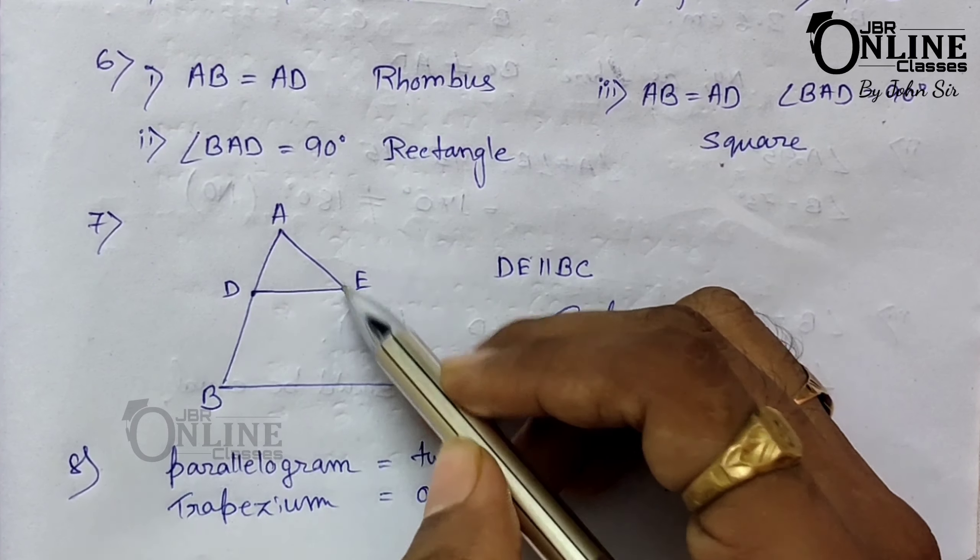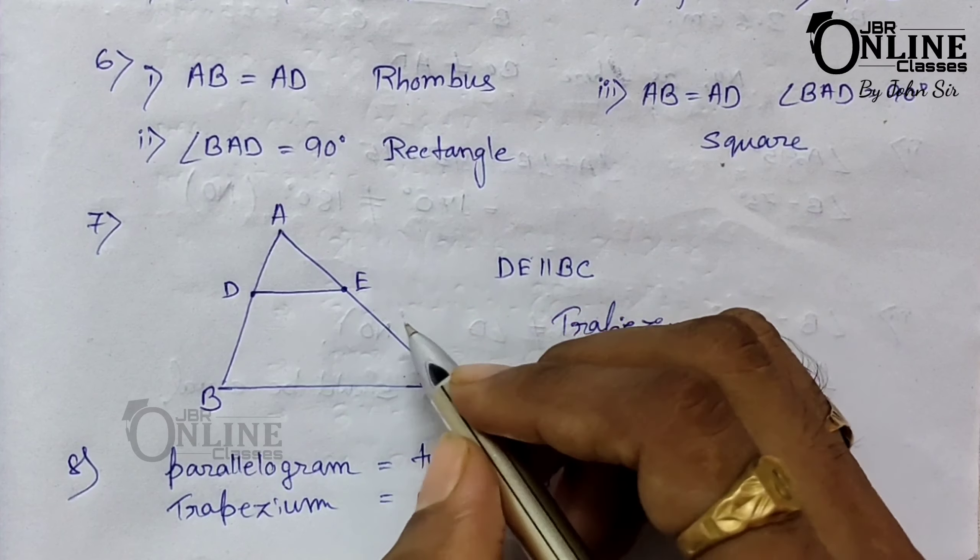Number seven: D and E are points on sides AB and AC respectively, and DE is parallel to BC. In quadrilateral BCED, two opposite sides are parallel, so it is a trapezium.